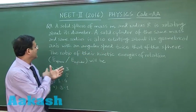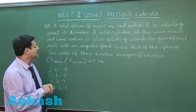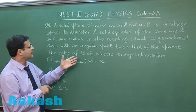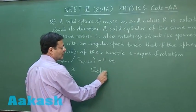That means about the axis which is passing through its center of mass along the length, with an angular speed twice that of the sphere. So you have to find out the ratio of their kinetic energy.